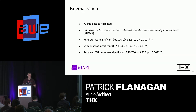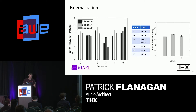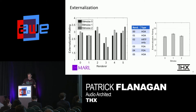The results: 79 subjects participated. We ran a two-way six-by-three ANOVA. We found that renderer was significant, stimulus was significant, and renderer-times-stimulus was significant in this test. For the externalization results — renderers zero through five are the six different renderers — the majority of renderers scored around two and a half on average for externalization. Renderer three performed pretty badly compared to the others, and the stimuli were all within a range of two and a half on the externalization rating.